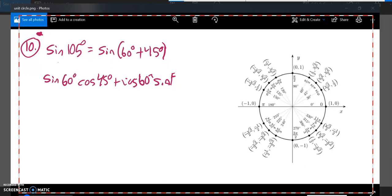So I can look up these values or maybe I already know them. There's sine of 60 degrees, there's cosine of 60 degrees. Sine of 60 degrees is root 3 over 2.